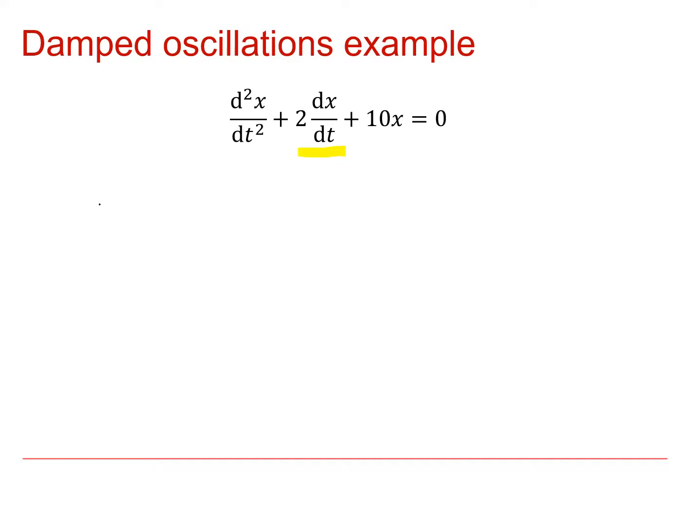In order to solve this differential equation, we start out with our auxiliary equation as before. So our auxiliary equation is going to give me lambda squared plus 2 lambda plus 10 equals 0. And completing the square, I'm going to get lambda plus 1 all squared plus 9 equals 0. And so that gives me that lambda is equal to minus 1 plus or minus 3i.